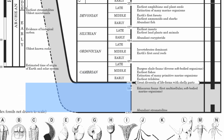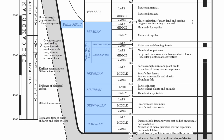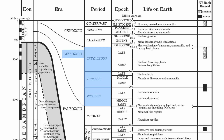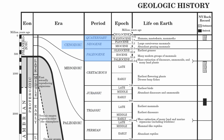Starting at the bottom, we have the Precambrian, which is an eon, an era, and also a period. Then we jump into our Paleozoic periods: Cambrian, Ordovician, Silurian, Devonian, Carboniferous, and Permian. We then have our Mesozoic periods of the Triassic, Jurassic, and Cretaceous, and the Cenozoic periods of the Paleogene, Neogene, and Quaternary.